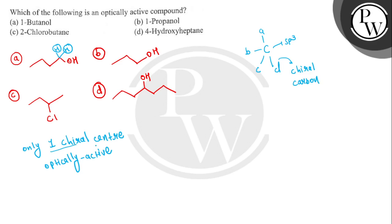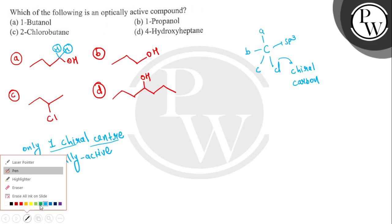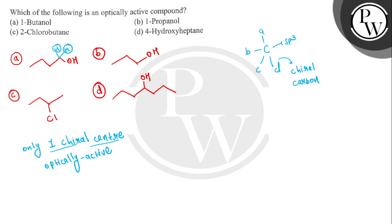If a compound contains only one chiral center, it will always be optically active. In option A, the carbon contains two identical hydrogen units — not a chiral center. In option B, again the carbon has two hydrogen units — not optically active. In option C, we have an sp3 carbon containing four different units: hydrogen, chlorine, methyl, and ethyl — so this compound is optically active.